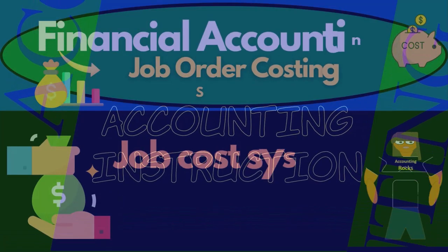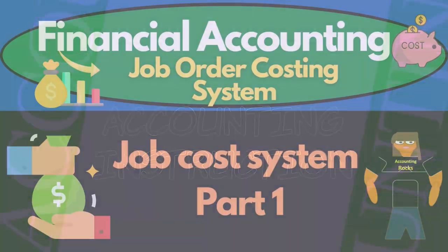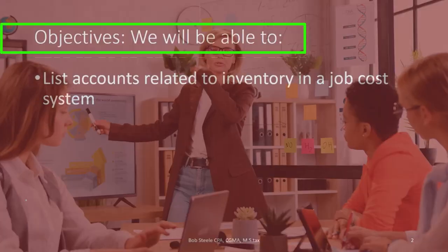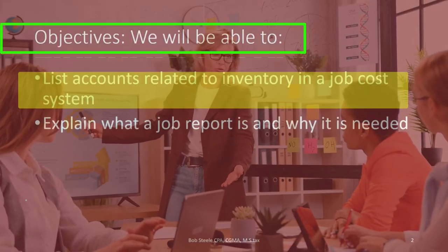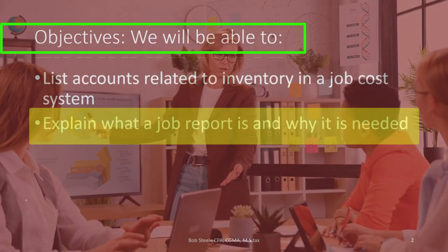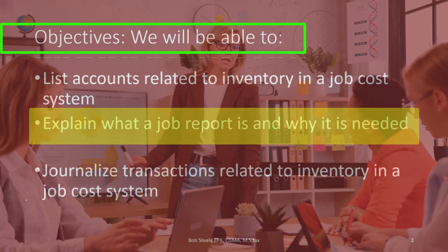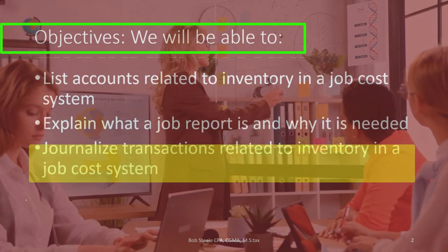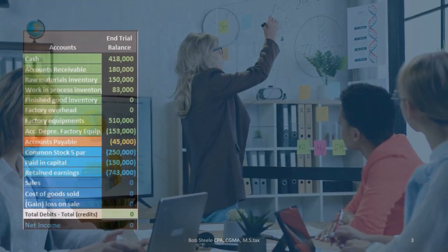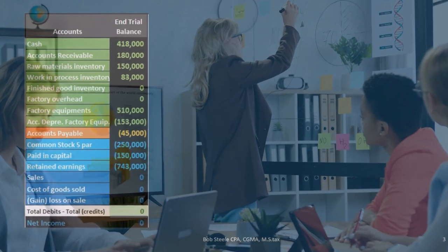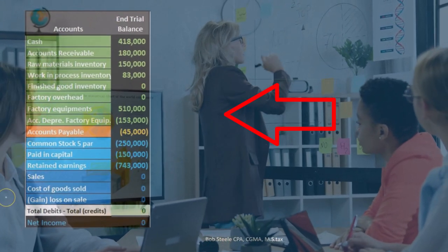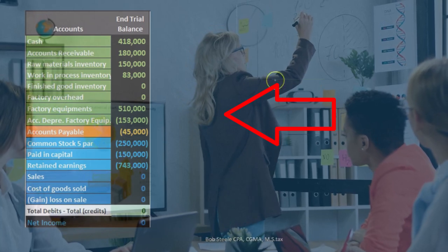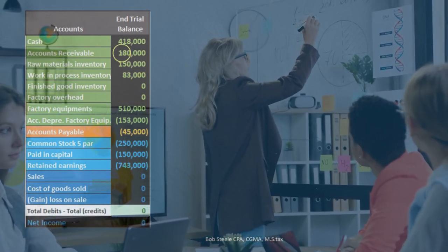In this lecture we're going to talk about a job cost system. At the end of this we will be able to list accounts related to inventory in a job cost system, explain what a job report is and why it is needed, and journalize transactions related to inventory in the job cost system. First we're going to take a look at a list of accounts, break out the items we'll be working with, then go through an example to demonstrate this.